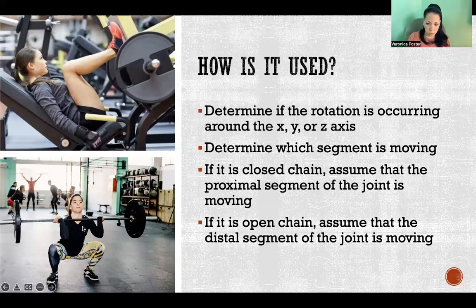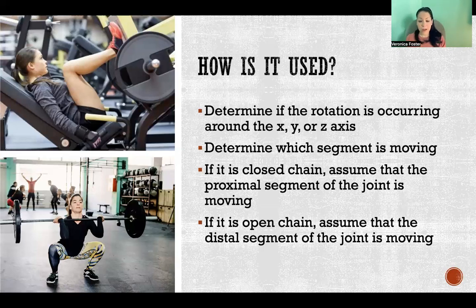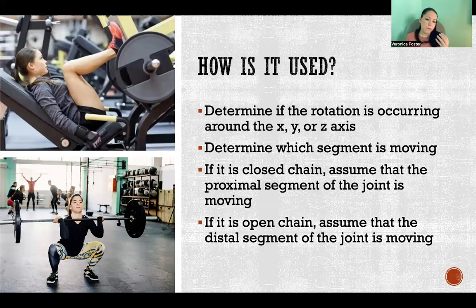For a closed chain like a squat, the distal segment is anchored, so it would be the proximal segment of each joint that is moving. At the ankle, the proximal segment would be the shin. At the knee, the proximal segment would be the thigh. At the hip, the proximal segment would be the pelvis. So depending on whether the end of the limb is anchored or not, that is how you determine which bone is moving. We're looking at a squat going up and down — it can be hard to say whether it's the femur or the pelvis, because they're both moving. But if the feet are anchored, then we can say it's going to be the proximal segment for each joint that's moving.